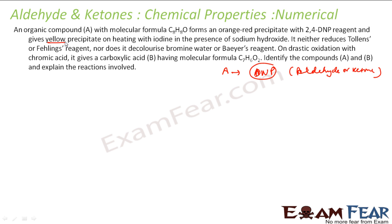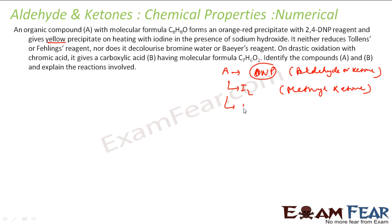Next, it says compound A gives a yellow precipitate on heating with iodine. This is the iodoform test — it means it is a methyl ketone. Additionally, it neither reduces Tollens' reagent nor Fehling's reagent. If it does not reduce Tollens' or Fehling's, that means it is a ketone, because aldehydes easily reduce these weak oxidizing agents.